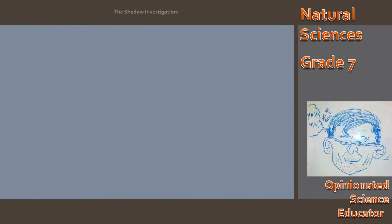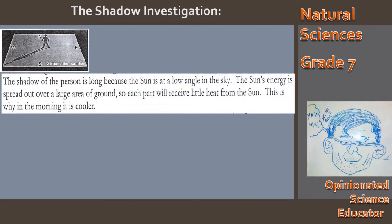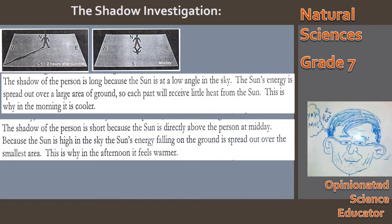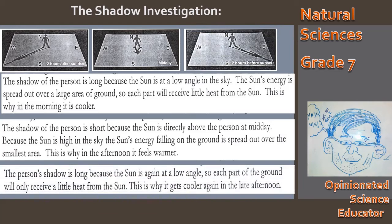Grade 7s, you are welcome to try that activity at home. Going back to the shadow investigation: in the morning, the shadow is long because the sun is at a low angle in the sky, and the sun's energy is spread out over a large area of the ground — that's why it is a little cooler in the morning than in the afternoon. At midday, the sun is directly above a person and high in the sky, so the energy falling on the ground is spread over a small area — that's why the afternoon often feels warmer. And again in the evening, the person's shadow is long because the sun is again at a low angle. Remember, it's not the sun that's moving, but it's the earth's rotation.